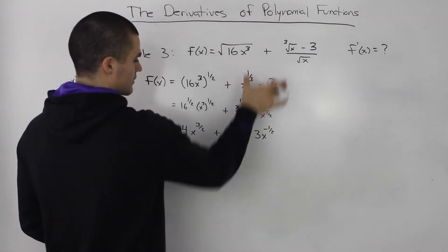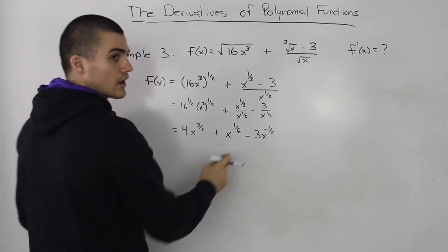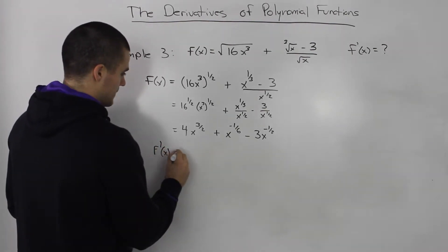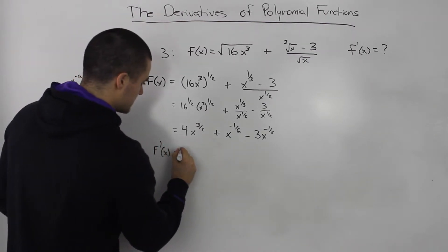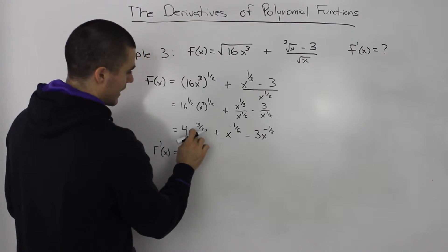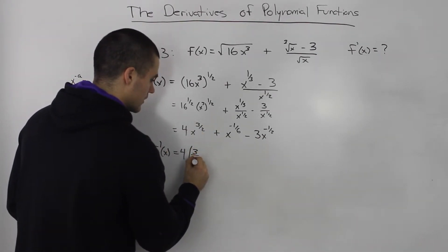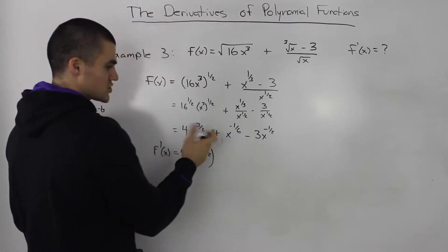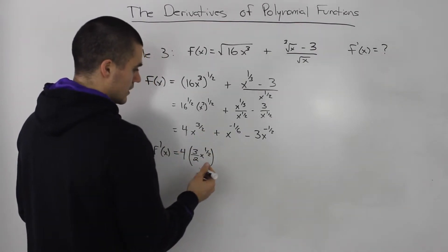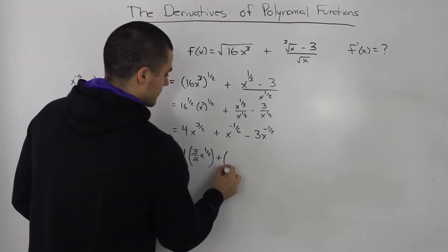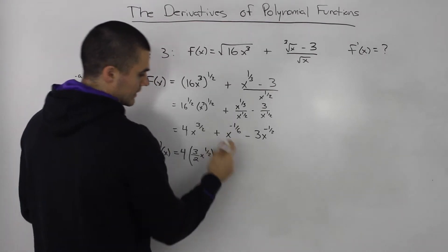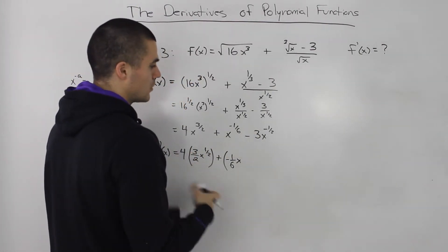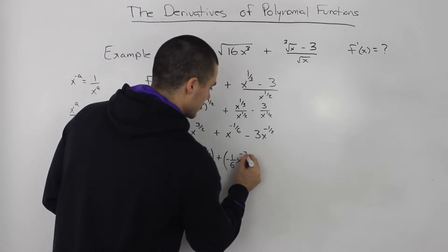We've simplified this function and now it's much easier to take the derivative. We can use the power rule on all of these terms. The derivative: we keep the 4 separate, then for x to the power of 3 over 2, we bring the 3 over 2 down and subtract 1, giving an exponent of 1 over 2. For x to the negative 1 over 6, we bring the negative 1 over 6 down, and negative 1 over 6 minus 1 equals negative 7 over 6.